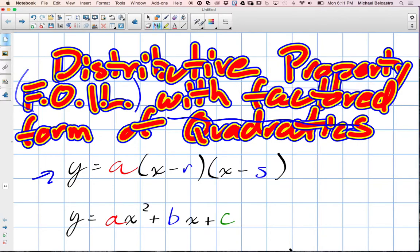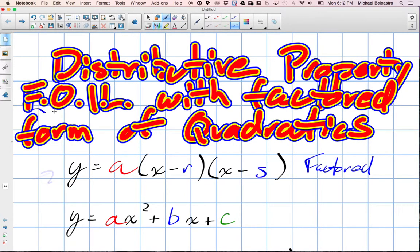So this is our factored form of a quadratic. I'll write it on the side here, so here's our factored form. And the reason we would distribute or use FOIL is to go from factored to what's known as the standard form.